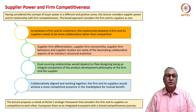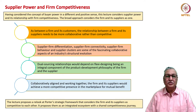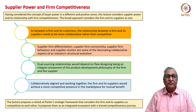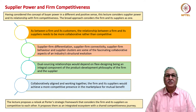Suppliers are an essential constituent of an industrial ecosystem. The reason for suppliers to exist is the inability of any firm to do all the items and all the components by itself. Specialization of skills, specialization of technology and resource diffusion require the existence of a vibrant and strong supplier industry as part of any broader industrial ecosystem. Supplier firm differentiation, supplier firm connectivity, supplier firm behavior and supplier clusters are some of the fascinating collaborative aspects of an industry's structural evolution.